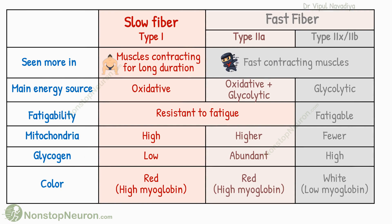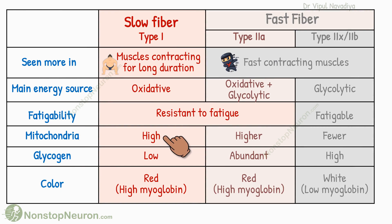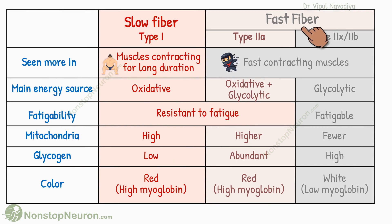Now let's have a quick summary. Slow fibers are seen in large quantities in muscles that contract slowly but maintain contraction for a longer duration. They use oxidative metabolism for energy, so they are resistant to fatigue. Accordingly, they have a high number of mitochondria and a larger quantity of myoglobin, giving them a red appearance. Their glycogen content is low. Fast fibers are seen more abundantly in fast-contracting muscles, and are further divided based on whether they are fatigable or not.